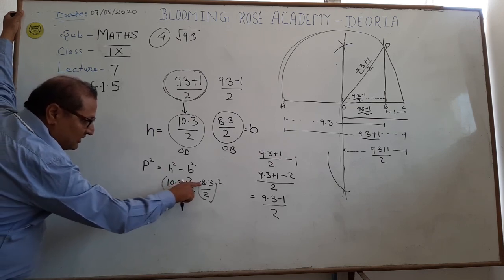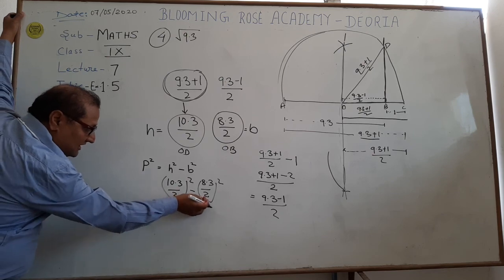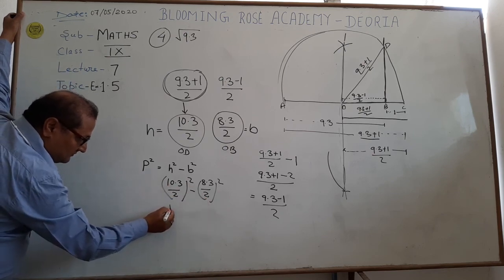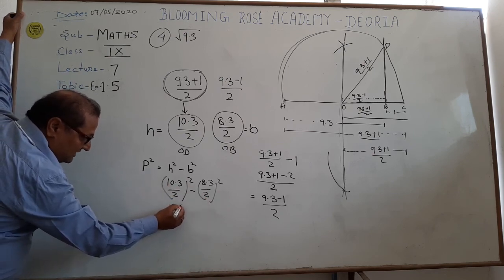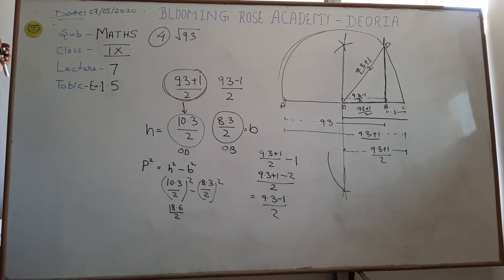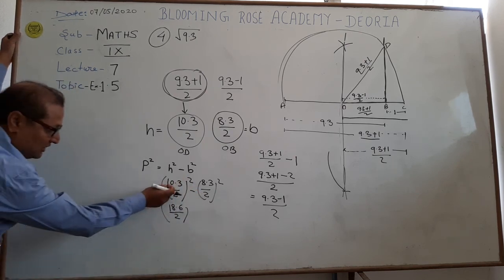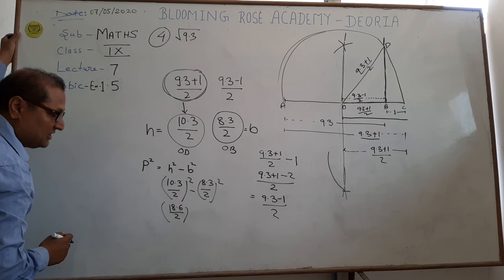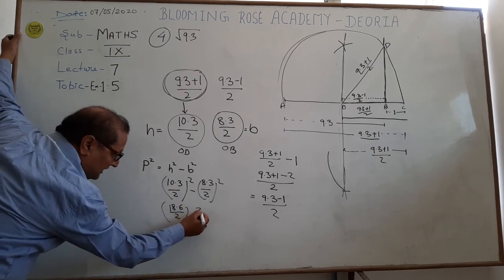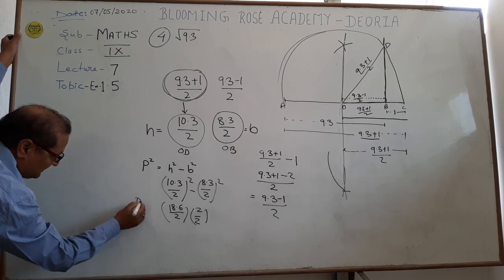So, you can see that 10.3 and 8.3 plus. Because the numerator is equal. So, this is 18.6 by 2. And when we use A minus B, we will use 10.3 minus 8.3. So, we will get 2 upon 2. So, this is the P square.